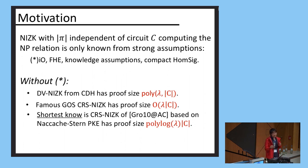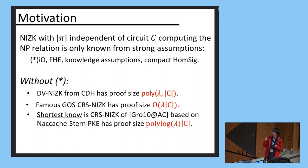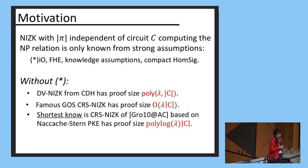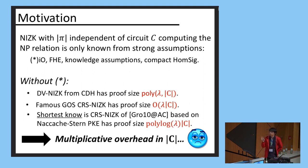The DV-NIZK that we were talking about so far has to go through these FLS transforms, so it has a very long proof size. The famous Groth-Ostrowski-Sahai NIZK has proof size that is security parameter times the circuit size. As far as we know, the shortest one without relying on strong assumptions is the CRS NIZK of Groth in 2010, which is based on a factoring-based assumption, and this has proof size that is polylog lambda times the circuit size. Looking at all of these NIZK proofs when you don't rely on strong assumptions, what we get is a multiplicative overhead in circuit size C. The question is: can we make this additive?